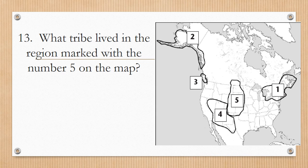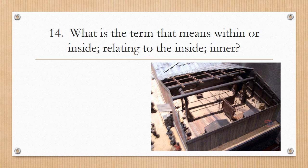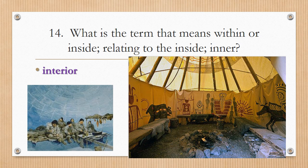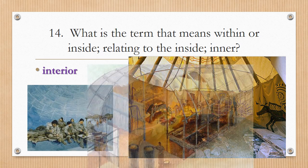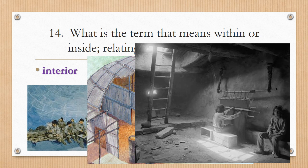Number thirteen: What tribe lived in the region marked with the number five on the map? Hopefully you said the Lakota Sioux. The region to remember for this tribe is the Great Plains. Number fourteen: What is the term that means within or inside, relating to the inner part? The term is interior. You can see the interior of an igloo, the interior of a teepee, the interior of a longhouse, and the interior of an adobe pueblo home.